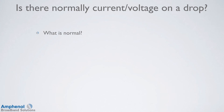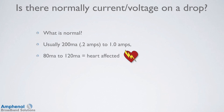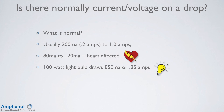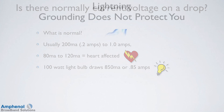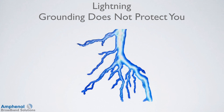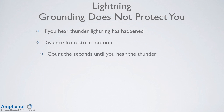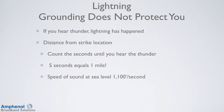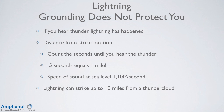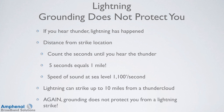It is normal to have from 200 milliamps up to 1 amp on a drop. At 80 to 120 milliamps, the heart can be affected. A standard 100-watt light bulb draws 850 milliamps. Grounding does not protect you from a lightning strike. If you hear thunder, lightning has happened. To tell the distance from the strike location, count the seconds until you hear thunder — five seconds equals one mile, not one second as many believe. The speed of sound at sea level is 1,100 feet per second. Lightning can strike from up to 10 miles from a thunder cloud. Again, grounding does not protect you from a lightning strike.